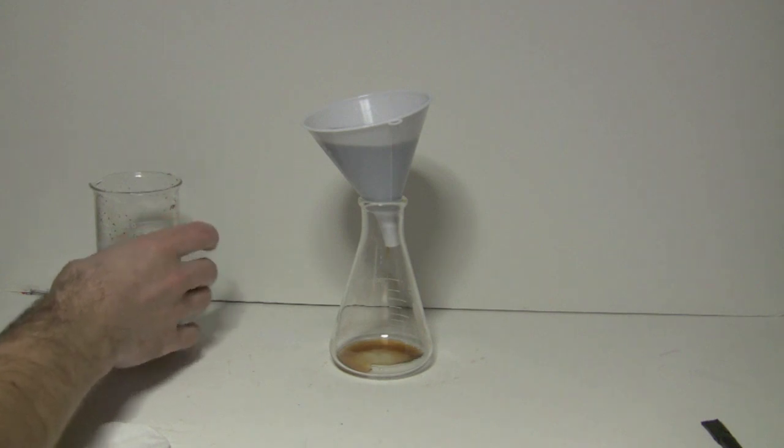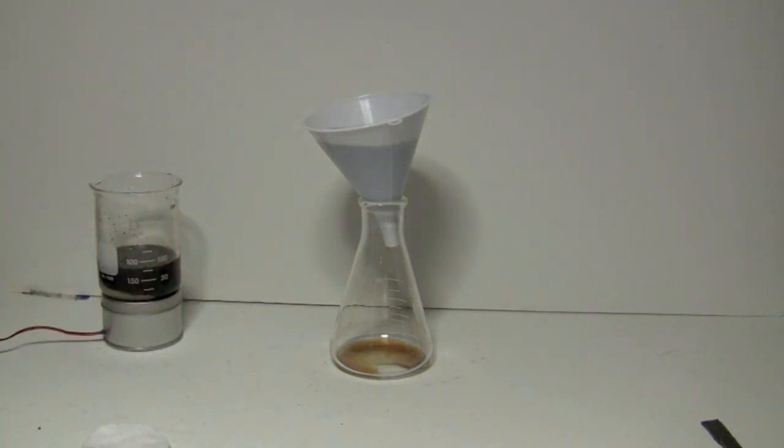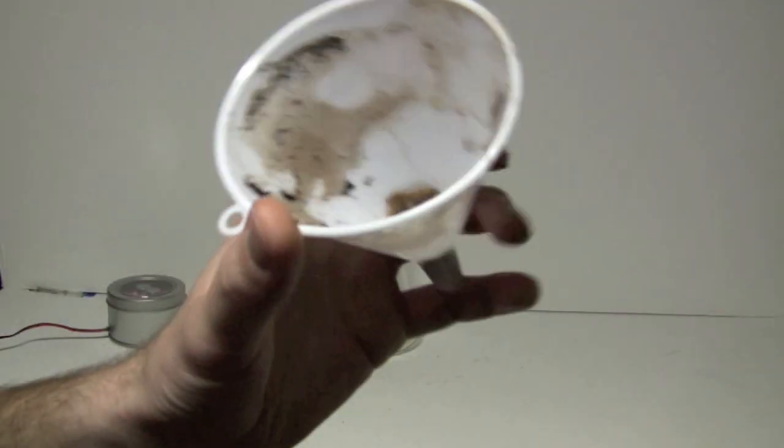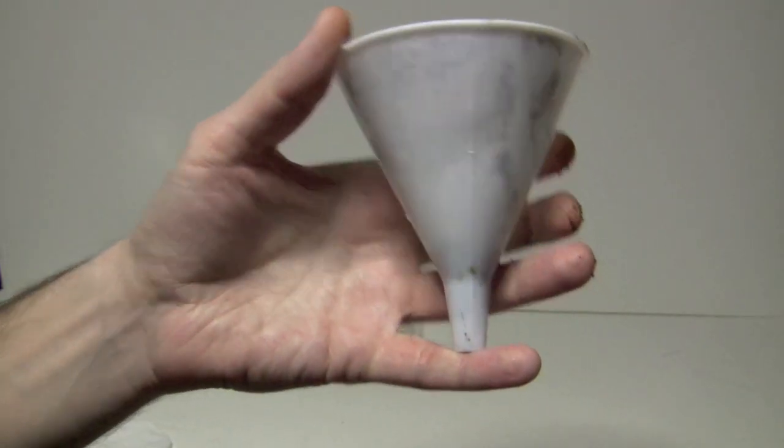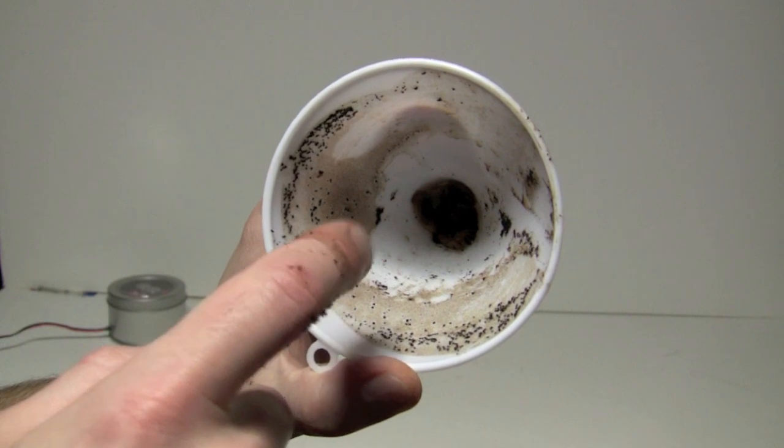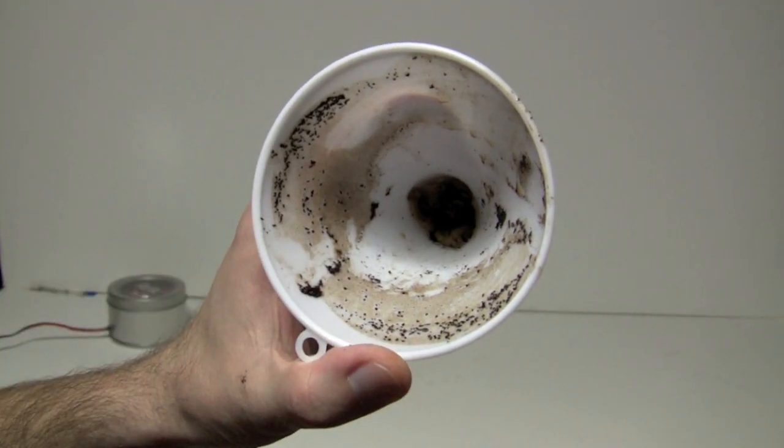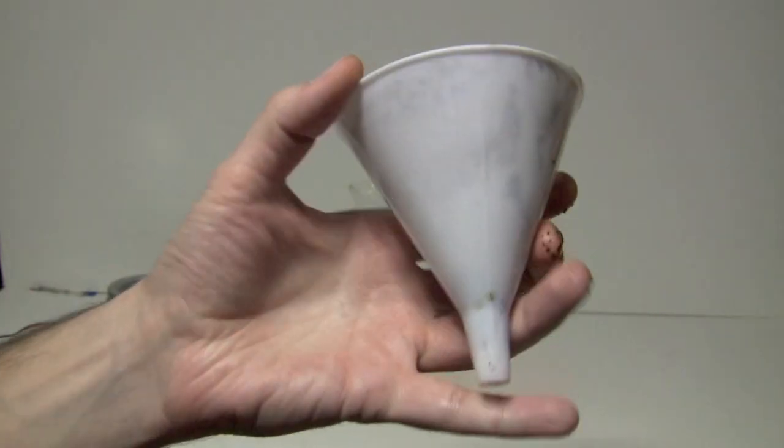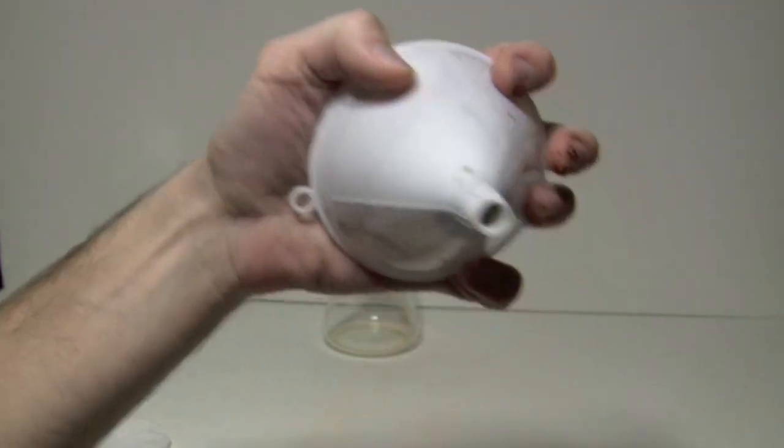As you can see, the water slowly drifts through the filter. This is a terrible way to filter anything, it will take hours. The main problem with this method is the size of the filtration area. All our stuff has to go through the small hole, which gets clogged in no time. The solution to the problem is to increase the area of filtration.